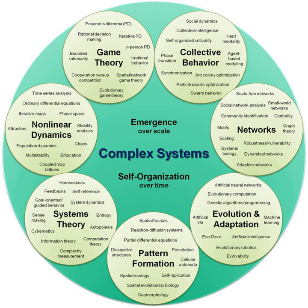Key concepts include: System — an organized entity made up of interrelated and interdependent parts. Boundaries — barriers that define a system and distinguish it from other systems in the environment. Homeostasis — the tendency of a system to be resilient towards external factors and maintain its key characteristics.